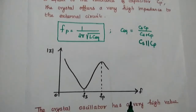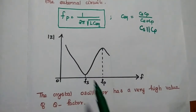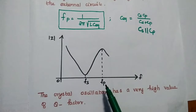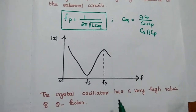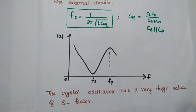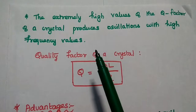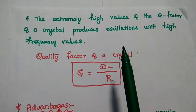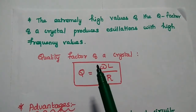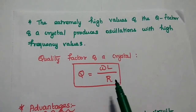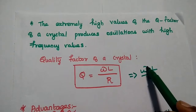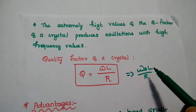In the impedance versus frequency diagram, at the series resonant frequency the impedance is a smaller resistance alone, while at the parallel resonant frequency its value is very high. The crystal oscillator has a very high quality factor Q, which defines its characteristics. The high Q value produces maximum oscillation over a high frequency range. The quality factor Q = ωS·L / R.